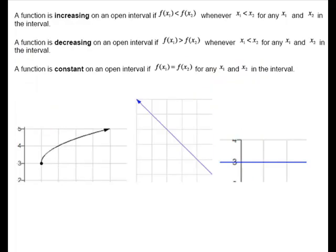Now we have some formal definitions. A function is increasing on an interval when f(x₁) is less than f(x₂) when x₁ is less than x₂. What that means is: if x₁ is smaller than x₂, then f(x₁) is lower than f(x₂). So if your y is bigger as your x gets bigger, then it's increasing.